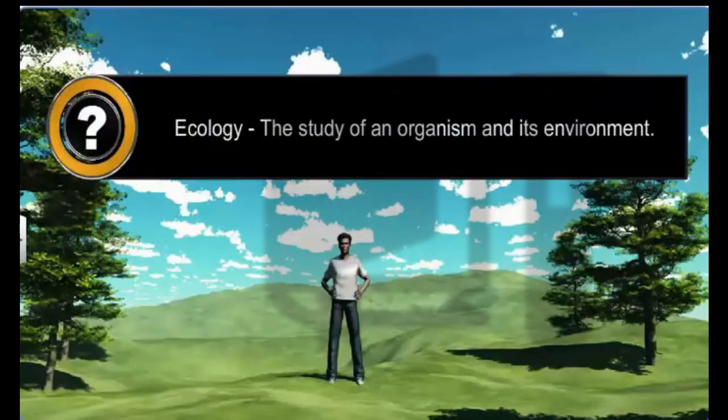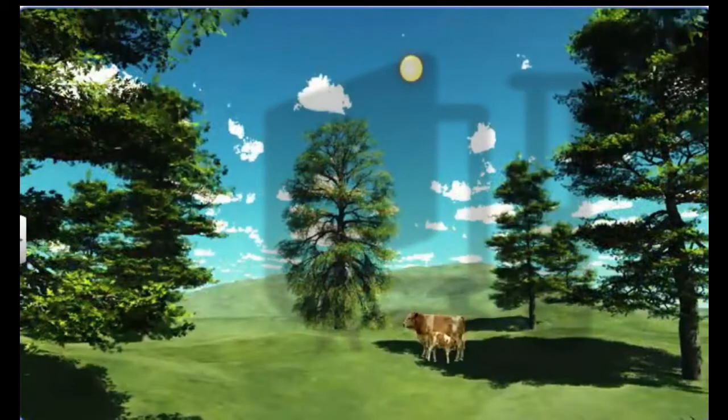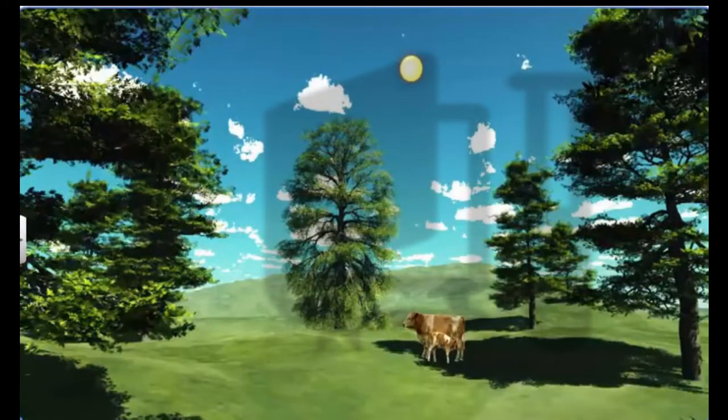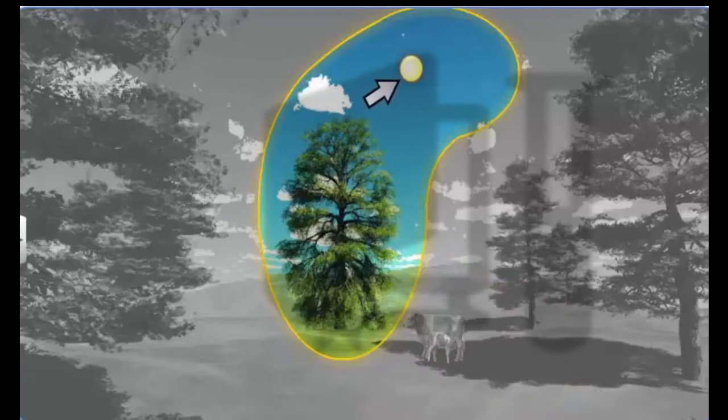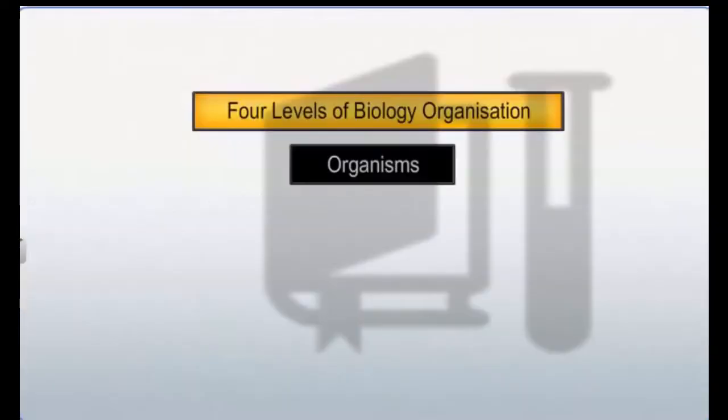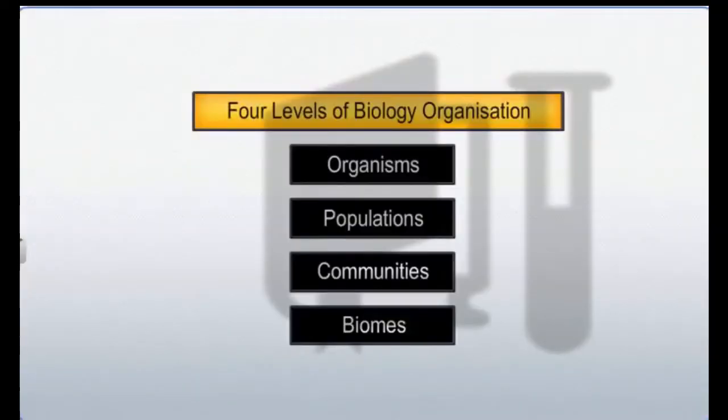The study of an organism and its environment is the traditional definition of ecology. Although various ecologists define it differently, ecology invariably studies the interactions among organisms and between the organism and its abiotic environment. It is studied at four levels of biological organization.